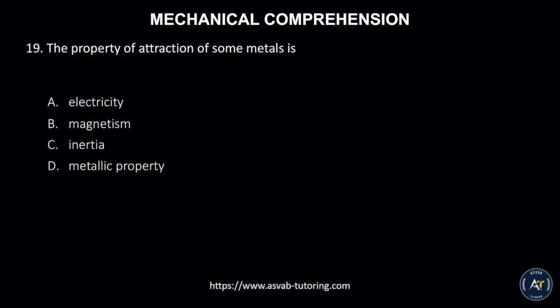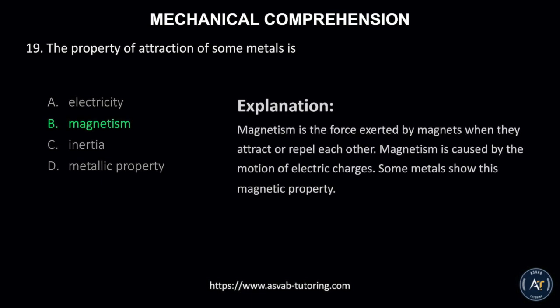Number 19. The property of attraction of some metals is? A. Electricity, B. Magnetism, C. Inertia, or D. Metallic property. The correct answer is B. Magnetism. Magnetism is the force exerted by magnets when they attract or repel each other. Magnetism is caused by the motion of electric charges. Some metals show this magnetic property.